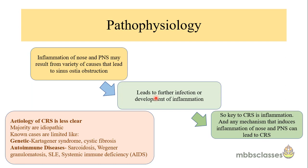The pathophysiology of chronic rhinosinusitis is quite complex without any clear-cut mechanism. Inflammation of the nose and paranasal sinuses may result from a variety of causes leading to sinus ostial obstruction, which ultimately leads to further infection and development of inflammation. Key to chronic rhinosinusitis is inflammation, and any mechanism that induces inflammation can lead to it. The etiology is less clear in the majority of cases, which are idiopathic.